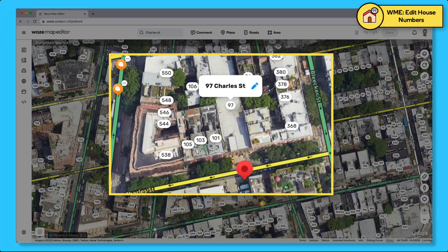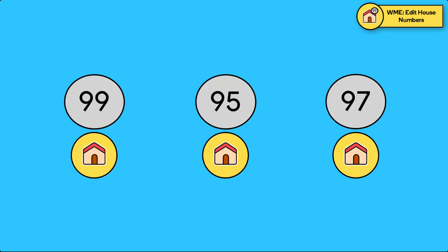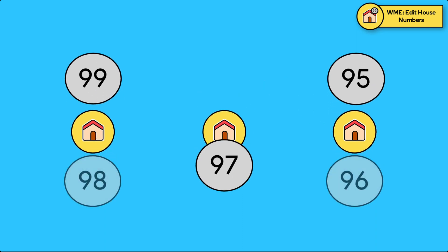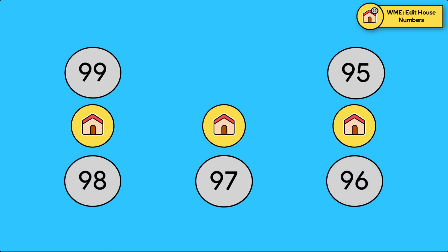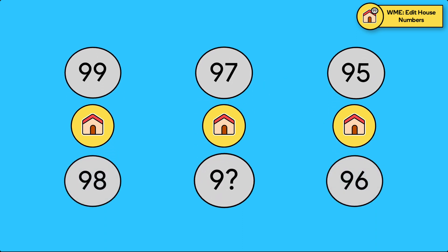If you do see the pencil icon, click on it and enter the correct number. To avoid errors, make sure that the house number is placed in the right order, that it is on the right side of the street, and that it doesn't include symbols.